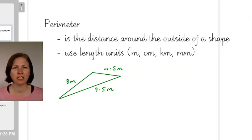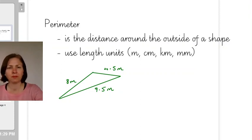Perimeter is the distance around the outside of a shape. So if you imagine if you had let's say a garden that had a fence around it and you walked the length of that fence, then that length is the perimeter.